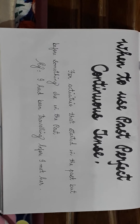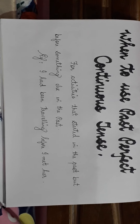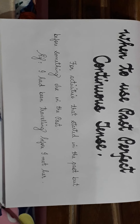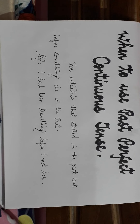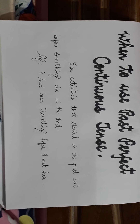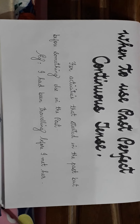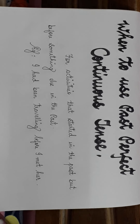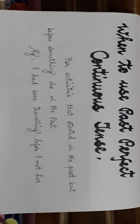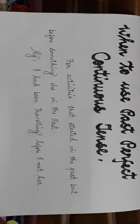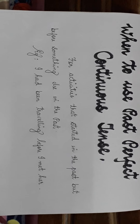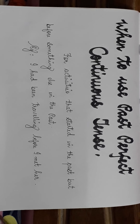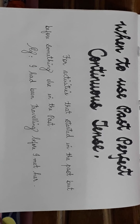When to use past perfect continuous tense: for activities that started in the past but before something else in the past. Example: 'I had been traveling before I met her.' This indicates that I started traveling in the past, it lasted for some time, and then I met a specific person.